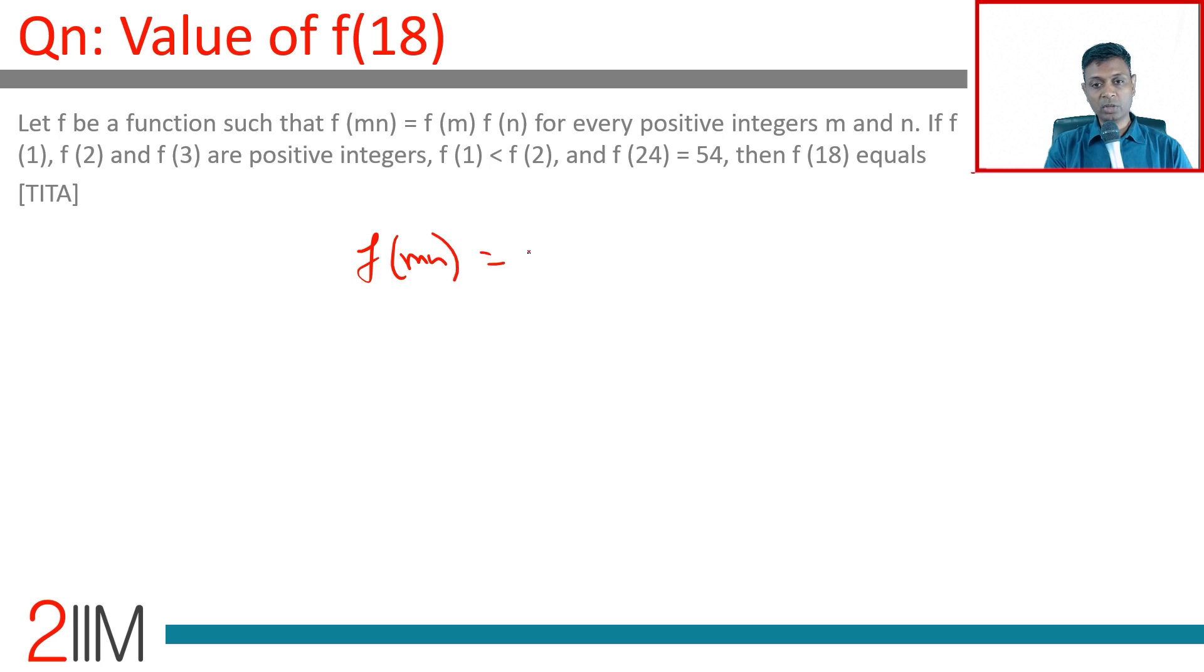f(mn) equals f(m) into f(n) for every positive integer m and n. If f(1), f(2), and f(3) are positive integers, f(1) is less than f(2), and f(24) equals 54.